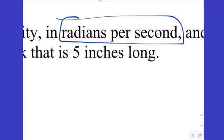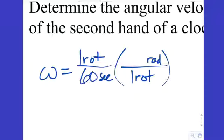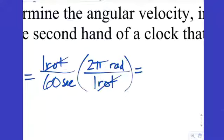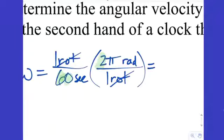Most of these problems come down to dimensional analysis. As long as the units you want in your final answer appear in the numerator and the ones you want to divide out are on opposite sides, you know the calculation is correct. We want rotations to divide out and radians to appear. One rotation is 2π radians, so rotations divide out and we're left with radians per second. Rather than a decimal approximation, let's get a simplified exact answer.